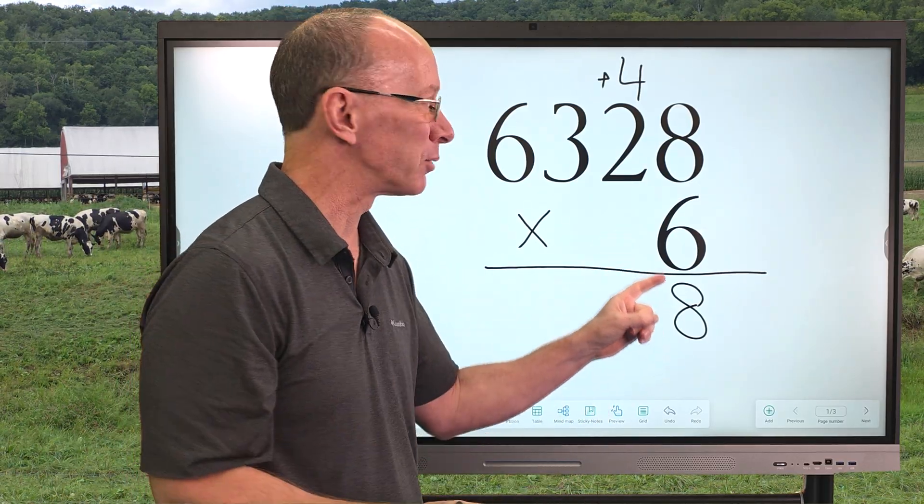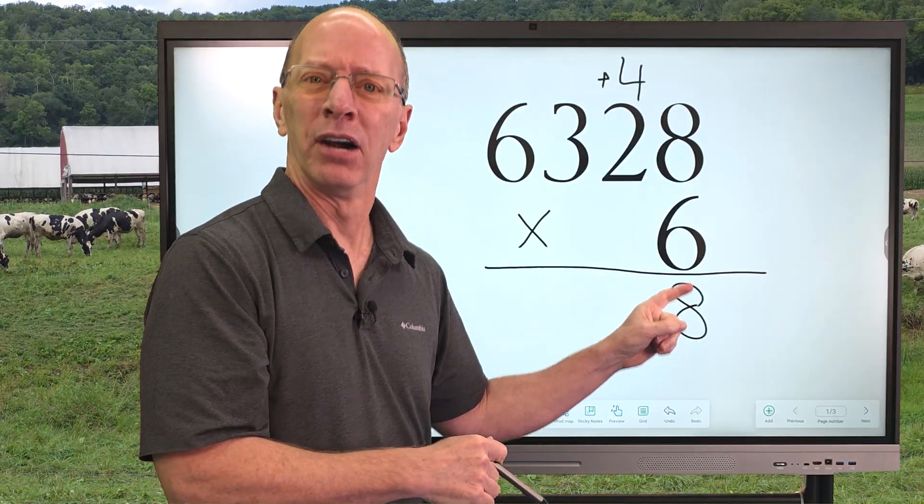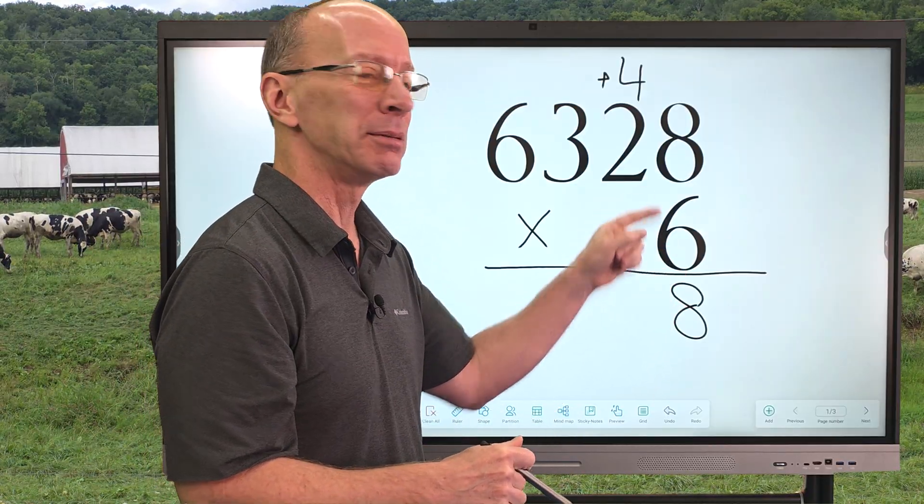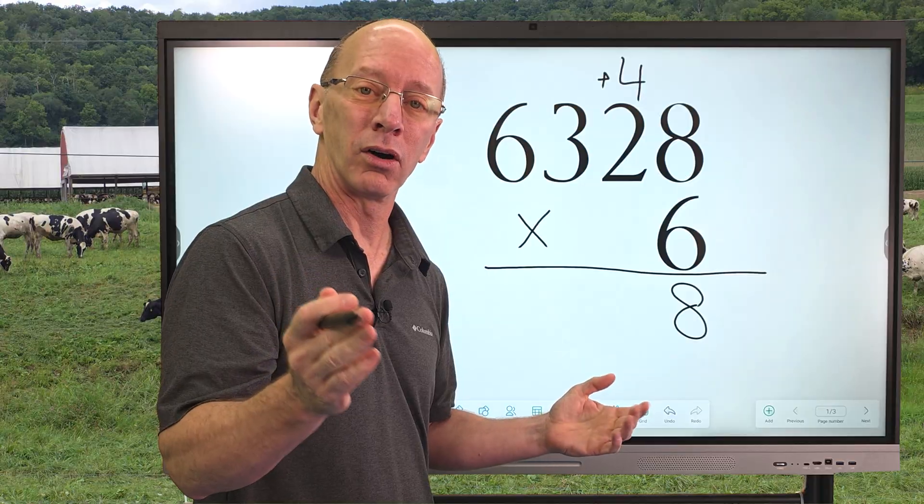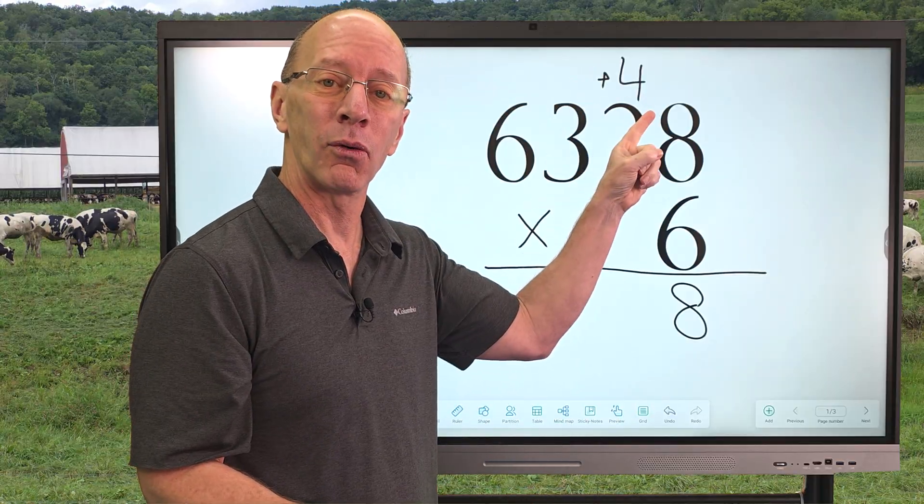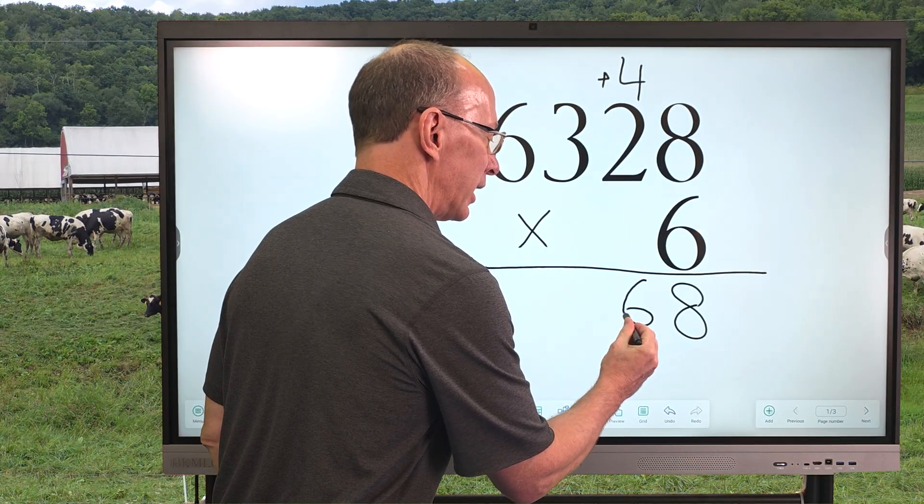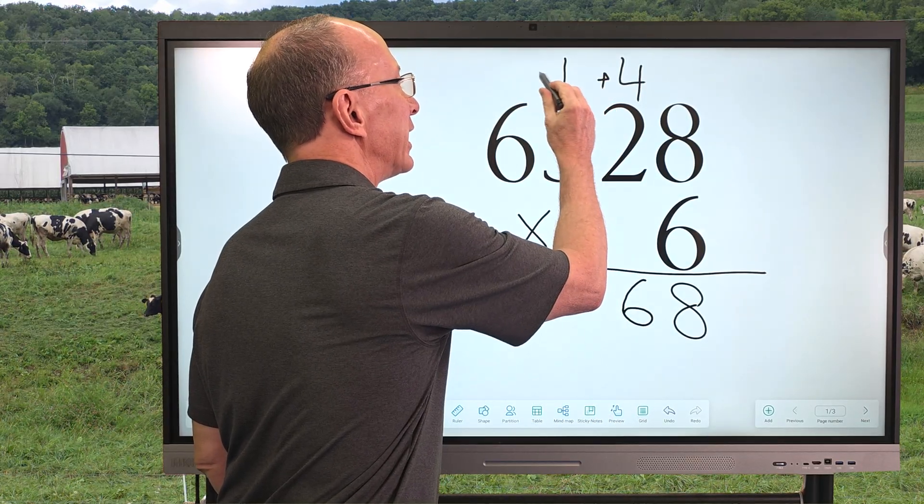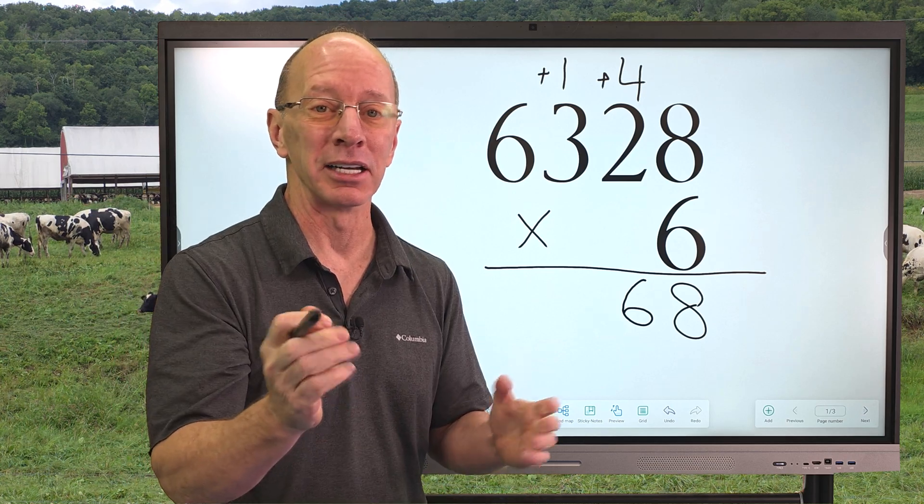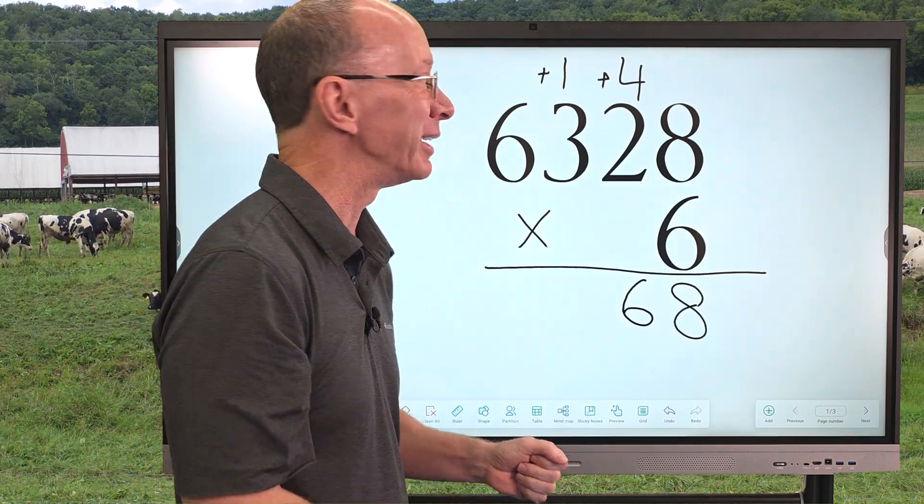Now next step is we're going to multiply 6 times 2. 6 times 2, 12 and then 12 plus that 4 is 16. So, I'm going to go ahead and put the 6 right here, carry that 1 up there and again, we're going to be adding that number in a little bit.